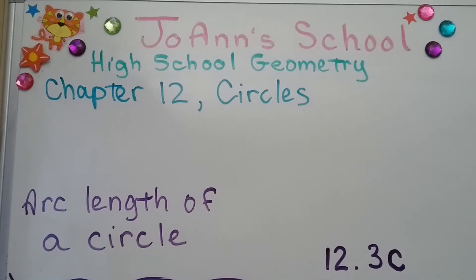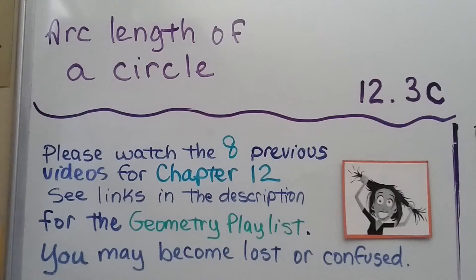Arc length of a circle — we're at 12.3C, which means we did A and B, so this is the third part of the lesson. If you've missed any of the previous lessons, they're linked in the playlist in the description.